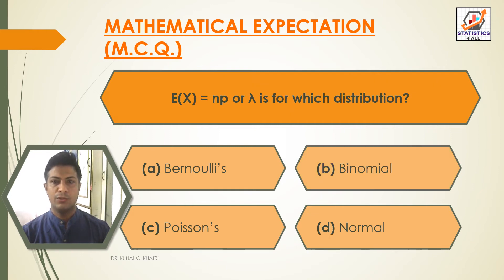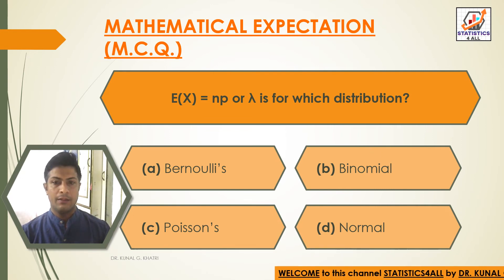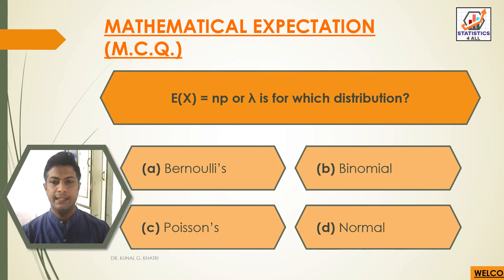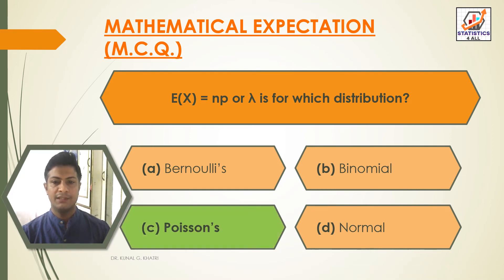E(x) equal to NP or lambda — that is the mean — is for which distribution? Option A — Bernoulli's; Option B — Binomial; Option C — Poisson; Option D — Normal. The answer is Option C: Poisson distribution, in which E(x) is equal to NP or lambda.